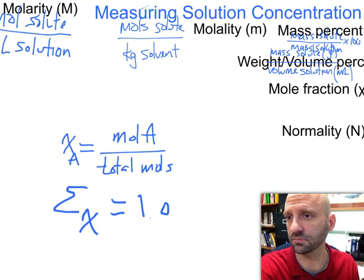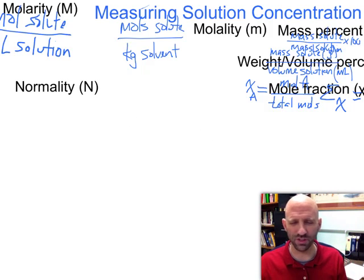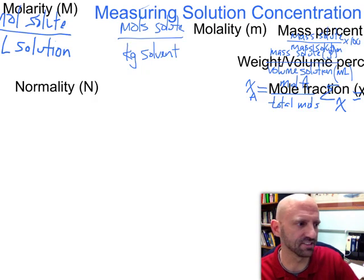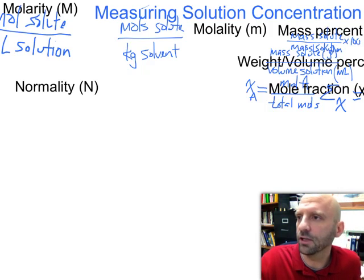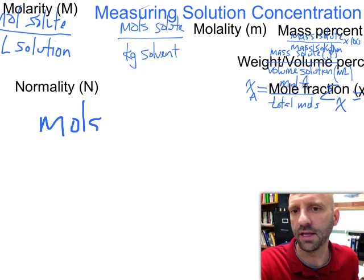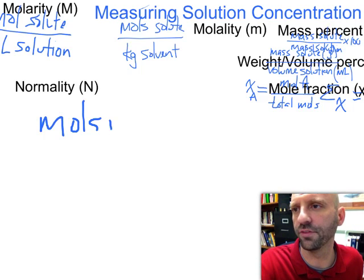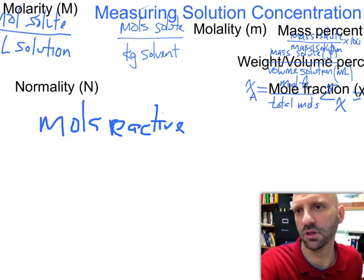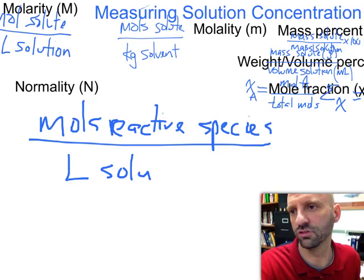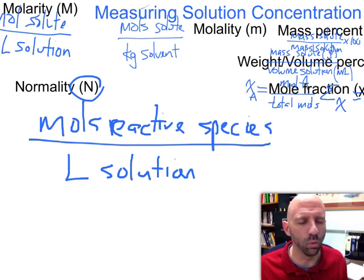Which leaves us with normality, which is kind of a funny sounding term, I admit. Almost sounds like we're measuring mental health or something like that. But normality looks an awful lot like molarity. We're going to have moles in the numerator, except it's moles of a particular part. It's going to be what I'm going to call the moles of the reactive species divided by the liters of the solution.